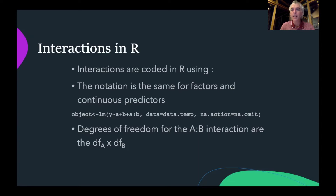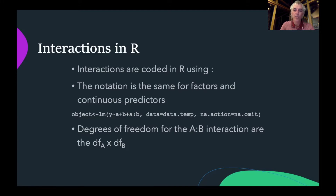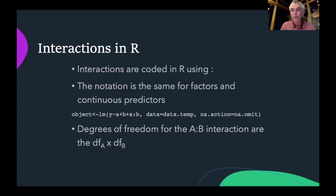We can specify a statistical interaction in R using the colon to indicate that we want to include a statistical interaction between two predictors A and B. The notation for a statistical interaction is exactly the same regardless of whether A and B are factors or continuous predictors. When calculating degrees of freedom for an interaction between any two factors A and B, the degrees of freedom for the interaction term is always equal to the degrees of freedom for A multiplied by the degrees of freedom for B.